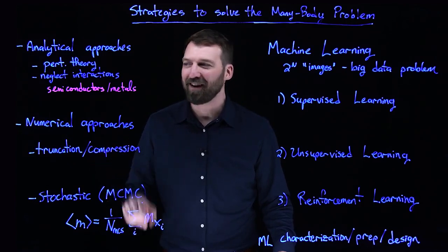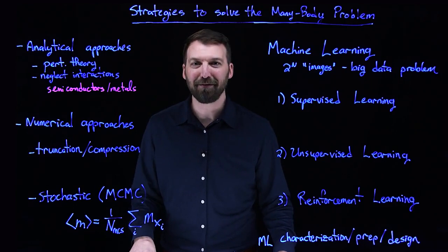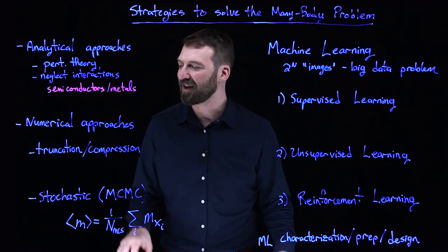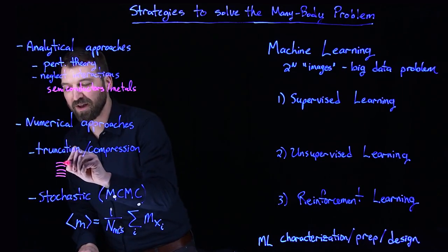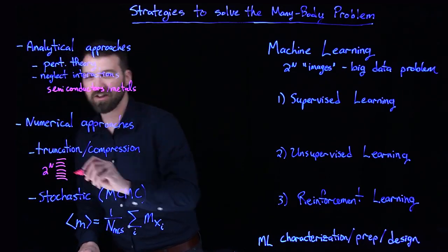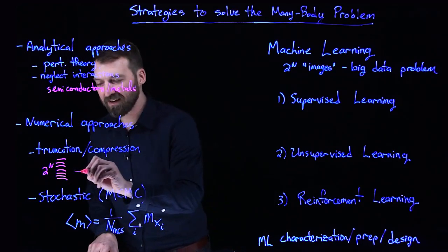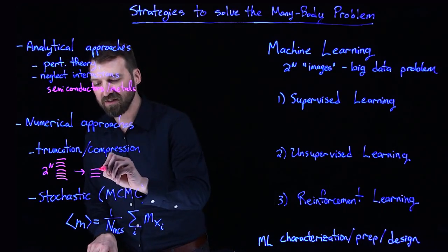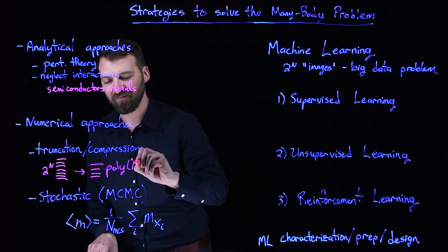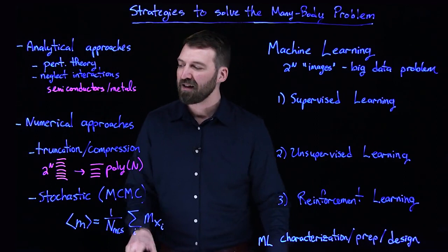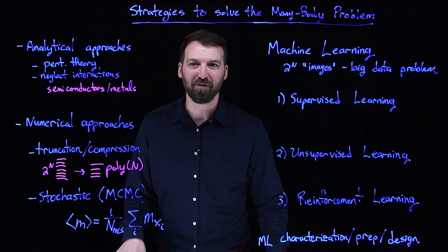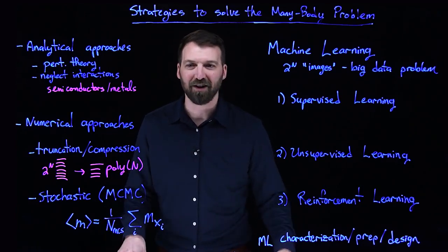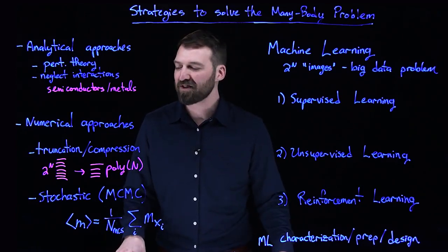Various numerical sort of approximations can be made, even in the regime of diagonalization, such as taking a Hilbert space or a spectra, an energy spectra that's exponential in size, and finding a way to truncate that down to something perhaps that's polynomial in the number of qubits. These types of truncation, compression techniques where you modify the Hilbert space can have varying degrees of success based on whether or not the problem is amenable to this type of truncation.